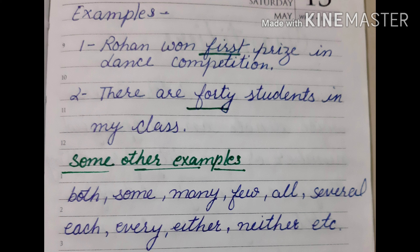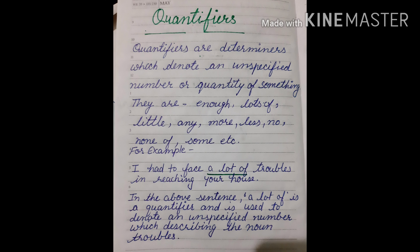Some other examples of numeral determiners are: both, some, many, few, all, several, each, every, either, neither, etc. Next are quantifiers. Quantifiers are determiners which denote an unspecified number or quantity of something.